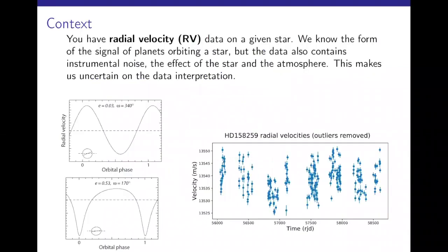The context is the following. You have radial velocity data on a given star, and you know from the physics that if there is a planet around this star, due to the Doppler effect, you should see in the data periodic changes. If the planet is circular, you would have a sinusoidal variation of the radial velocity. If the planet is eccentric, you will have a periodic variation which has a slightly different shape. And so if you detect that kind of variation in the RV, then you would have detected the planet.